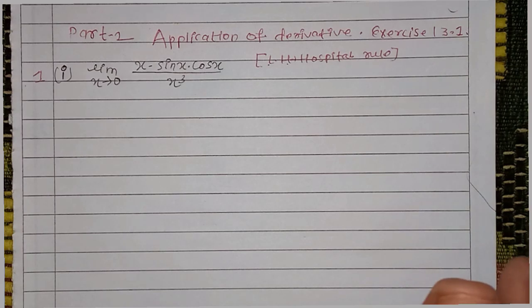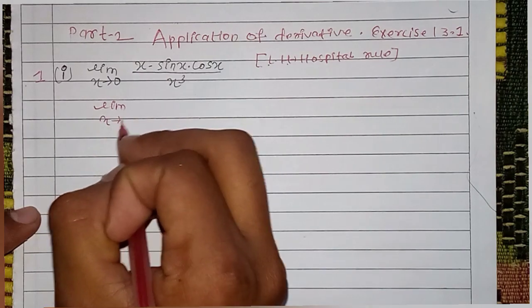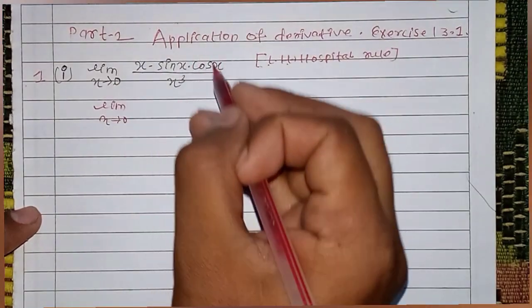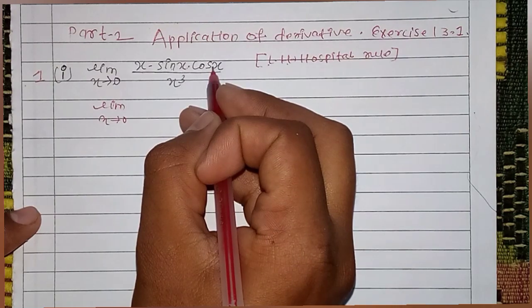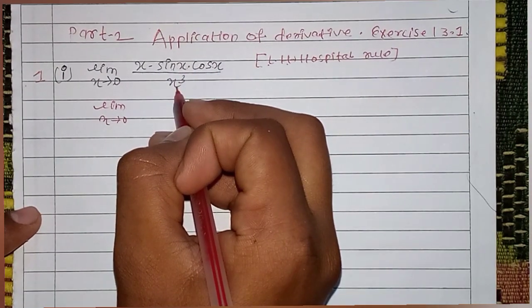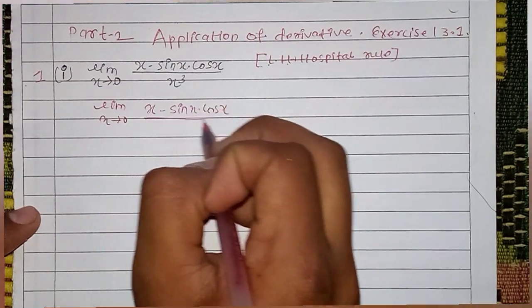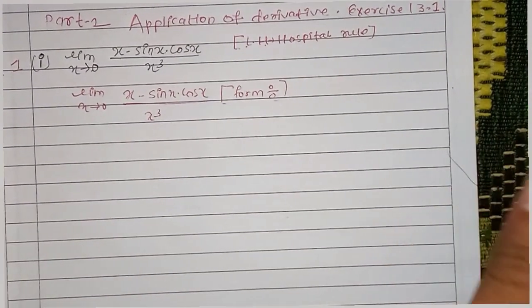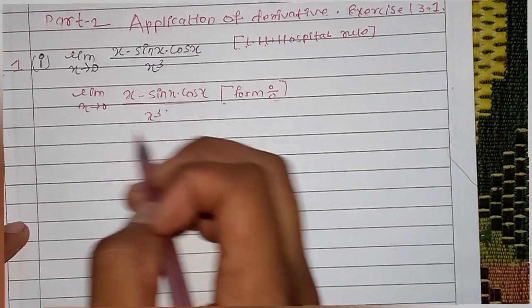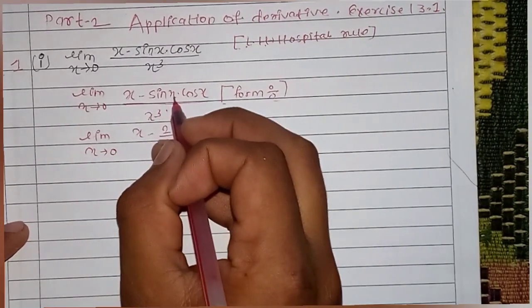L'Hôpital's rule. Limit x tends to 0, x minus 2x. We get 2 sin x cos x raised — so the derivative gives 2 sin x cos x.